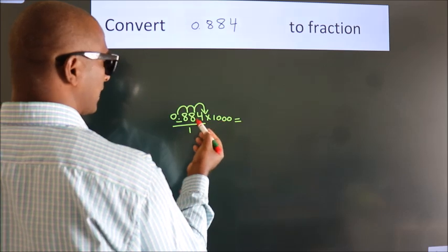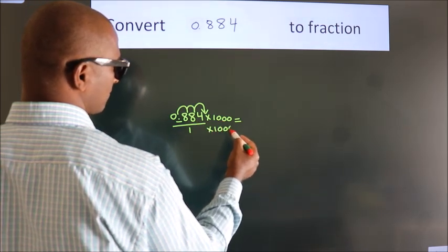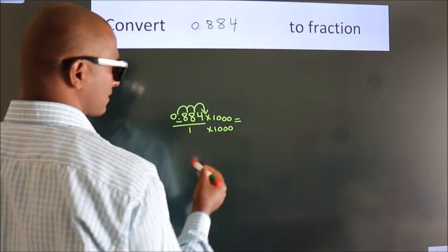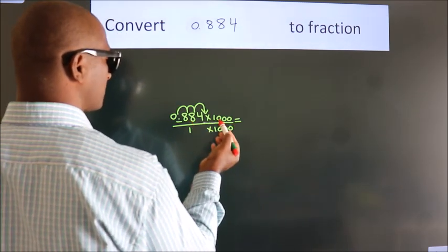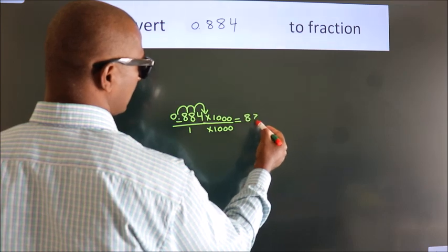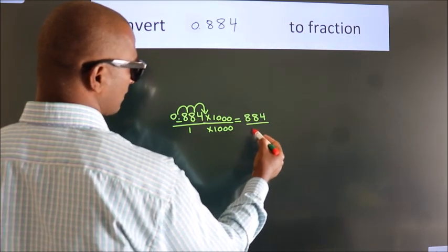Whatever number you are multiplying in the numerator, in the denominator also do the same. Next, 0.884 into 1000 is 884. 1 into 1000 is 1000.